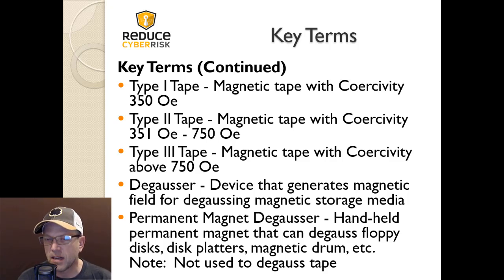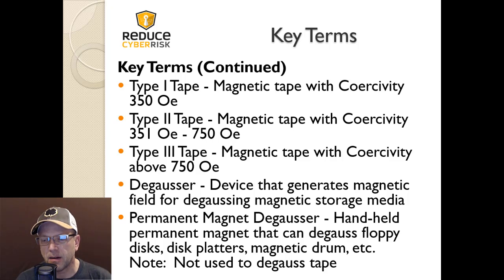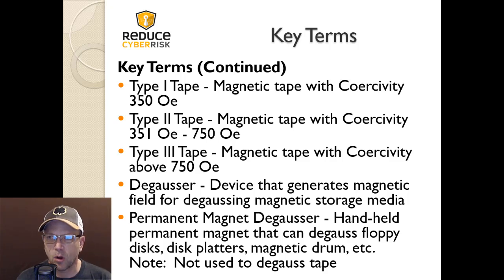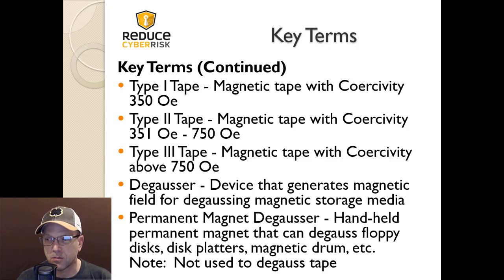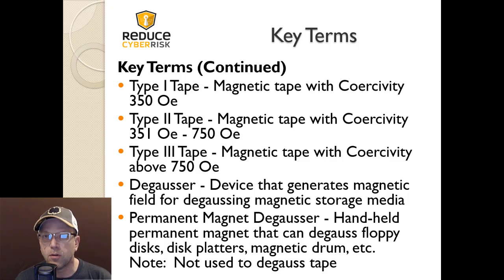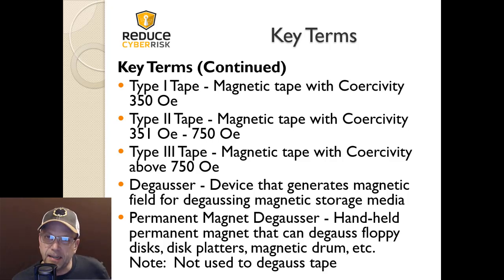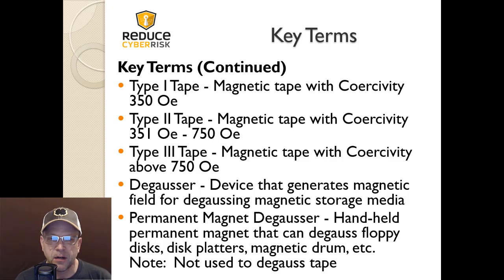A degausser is a device that generates a magnetic field for degaussing magnetic storage media. It basically creates a force field using enormous magnets that rearrange all the bits so they're no longer in a logical path the device can point to. However, as SSDs have come into play, the degausser has no effect on them, so you'll have to resort to physical destruction for solid-state drives.